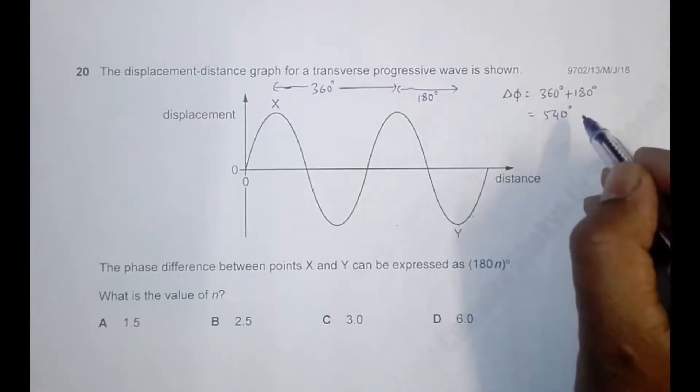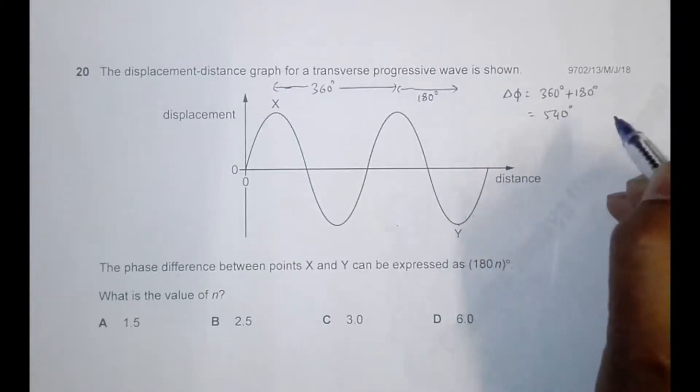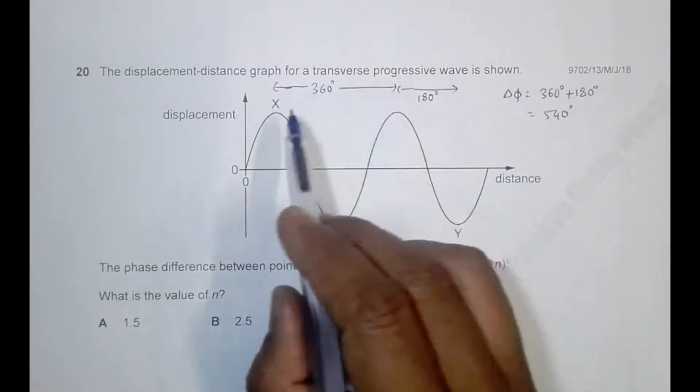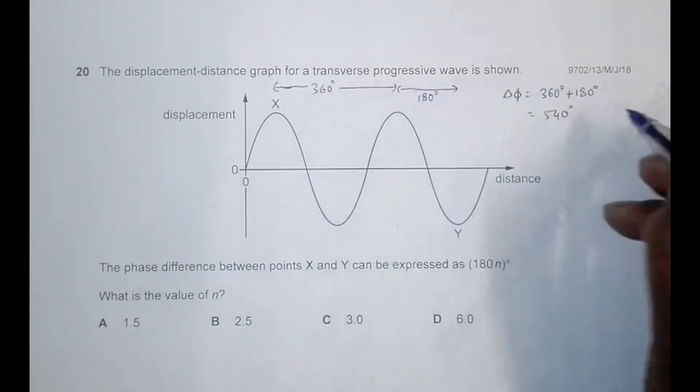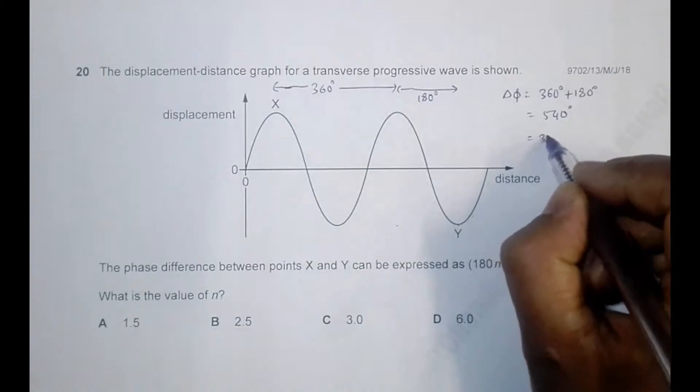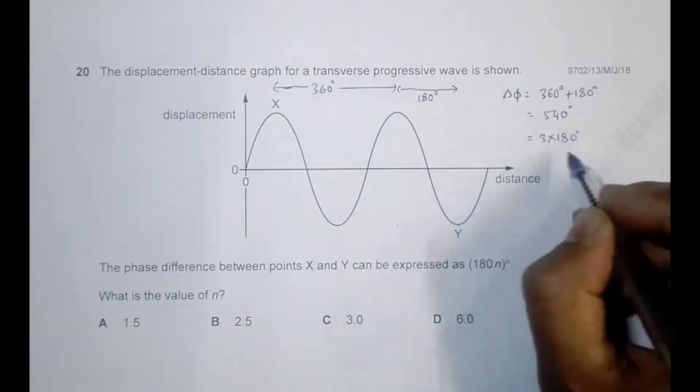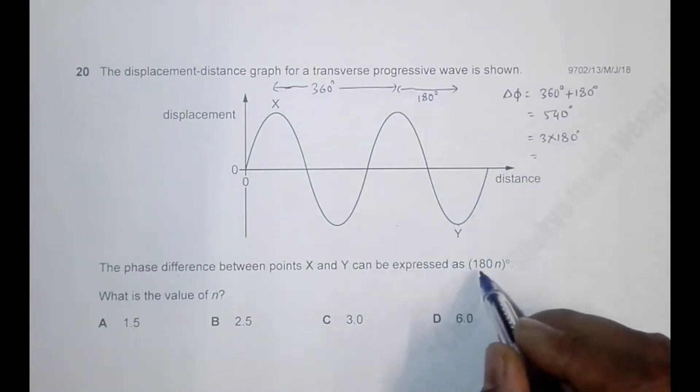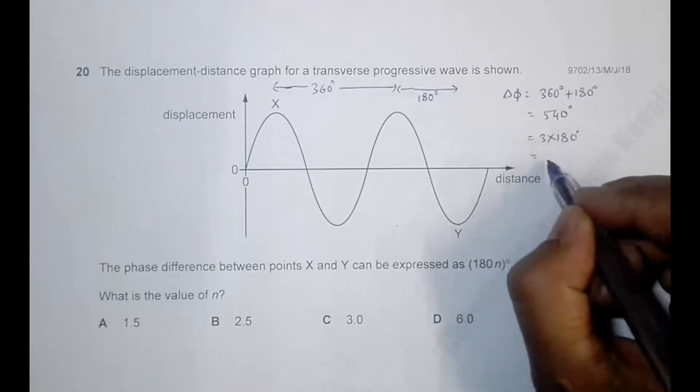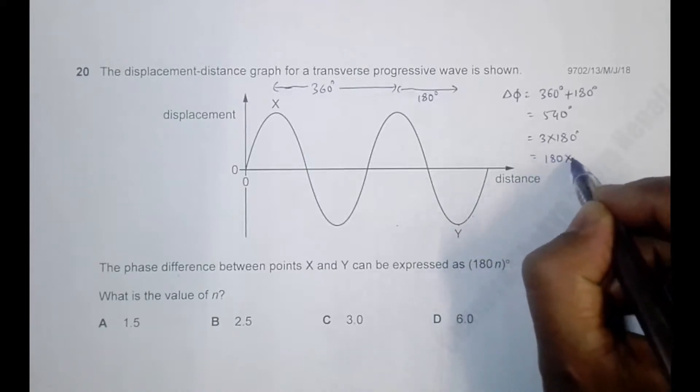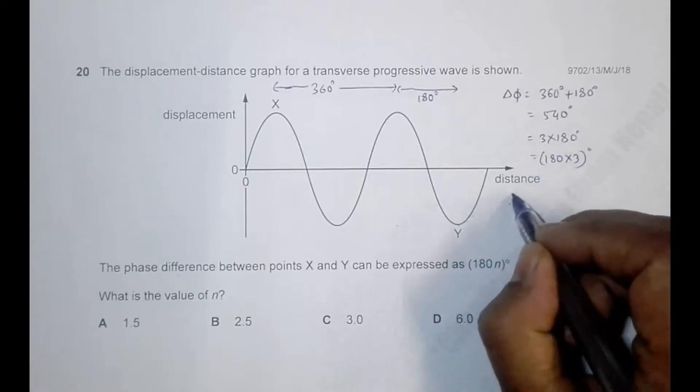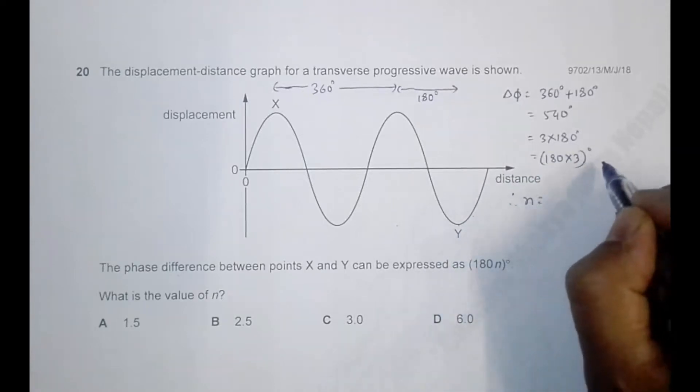of 180 degrees, it will be equal to - so this is 360, which is 2 pi, and 180, so it's equal to 3 into 180 degrees. So that means here we have to express in terms of this, so it is equal to 180 into 3 degrees. This means that the value of n